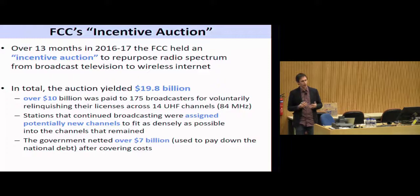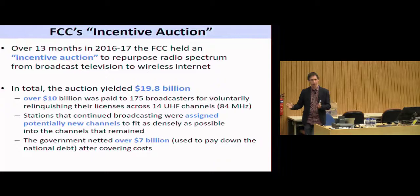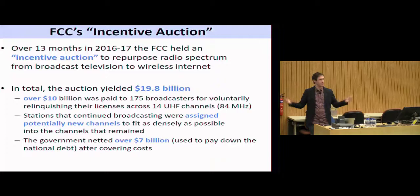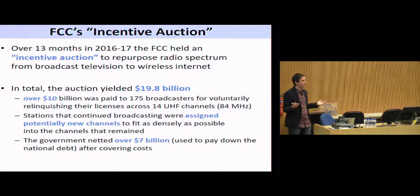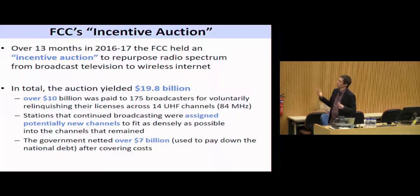The incentive auction was an exercise by the United States to repurpose radio spectrum from television broadcast to mobile broadband. Over time, radio spectrum has been getting auctioned off by governments, making absurd amounts of money — selling companies the right to exclusive use of some narrow range of frequencies within a particular geographic area. Governments discovered this was a way of getting a lot of money while simultaneously making consumers and companies happy. But the problem is they ran out of spectrum.